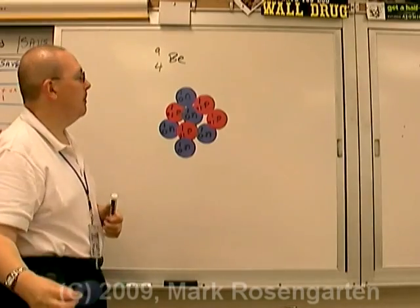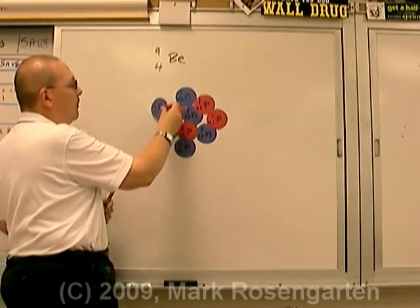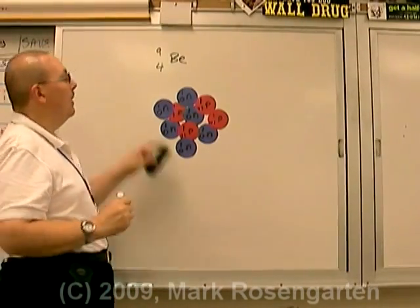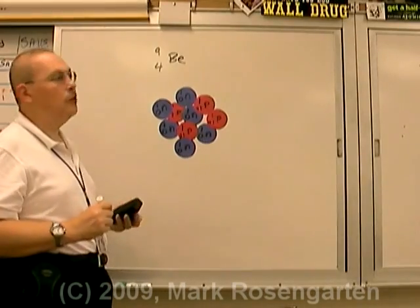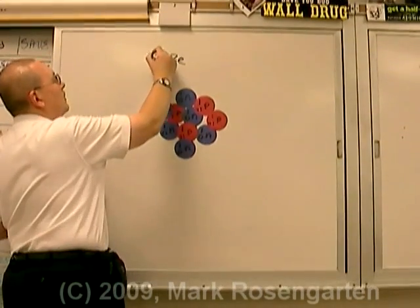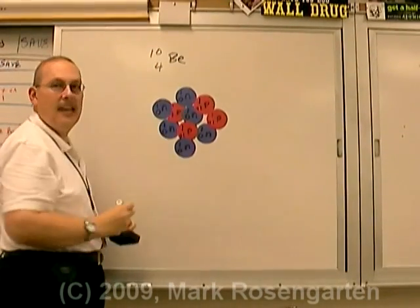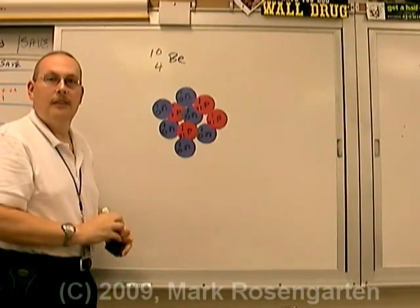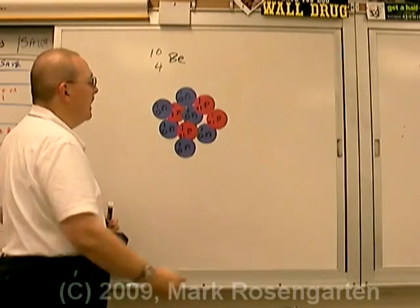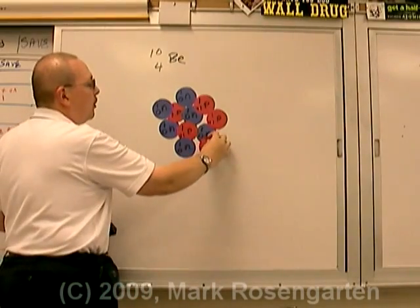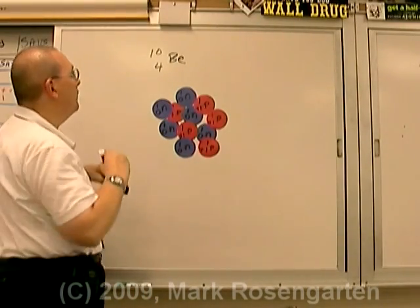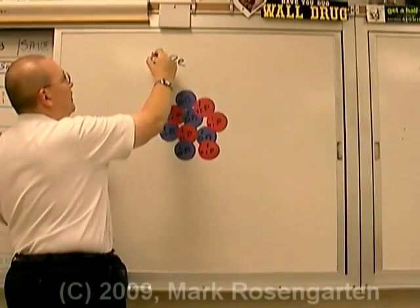What would the mass number of this isotope be? We added one more neutron, so now it has a mass number of ten.